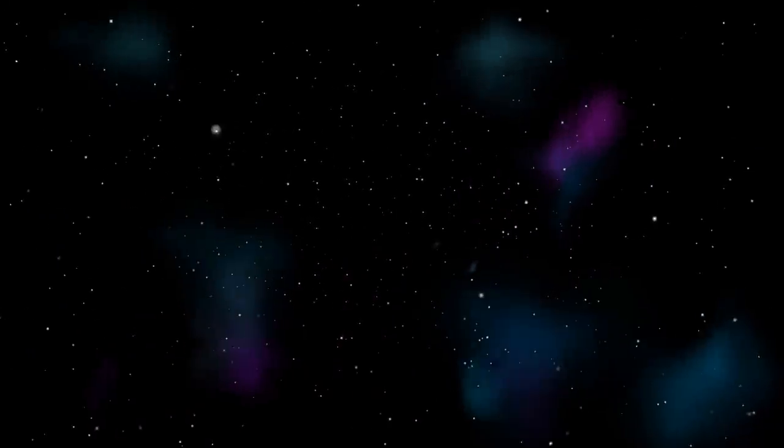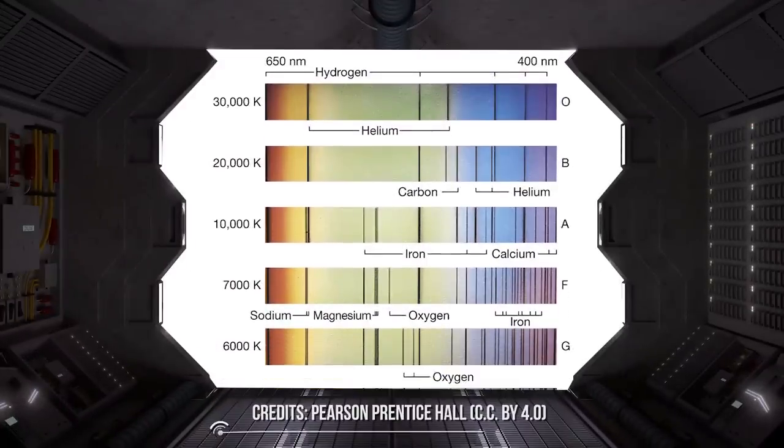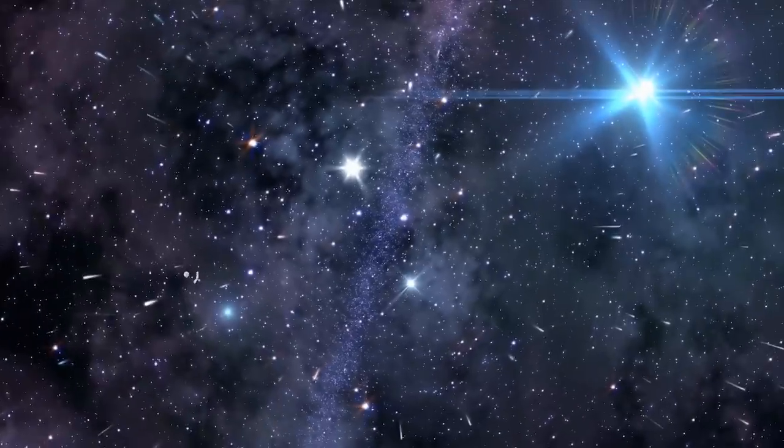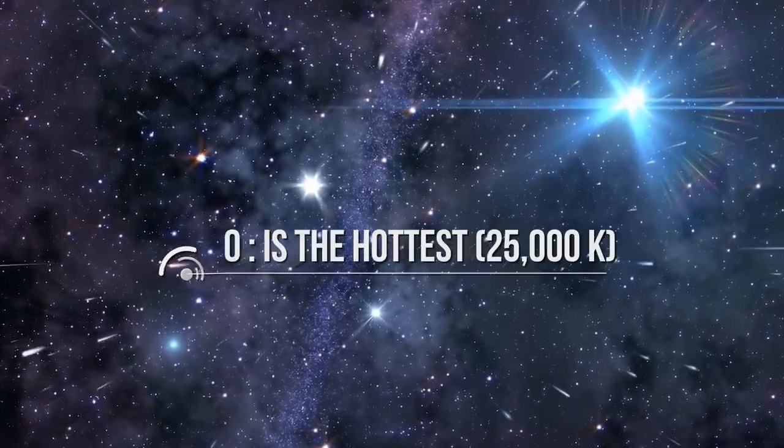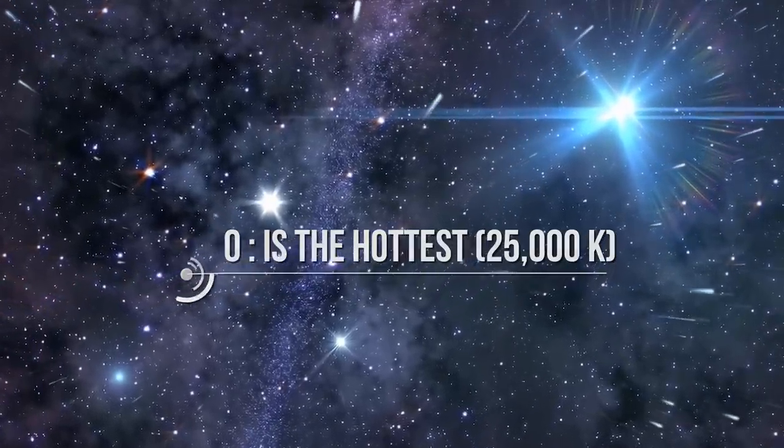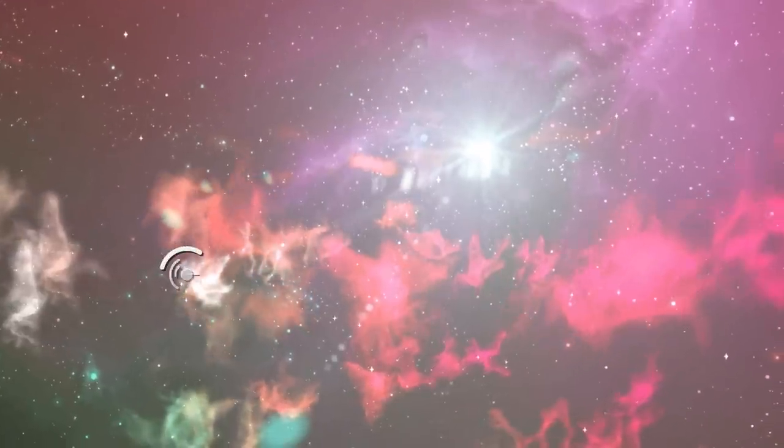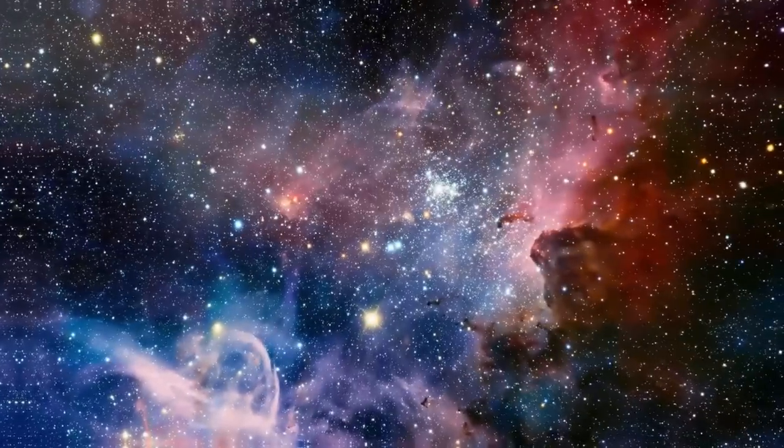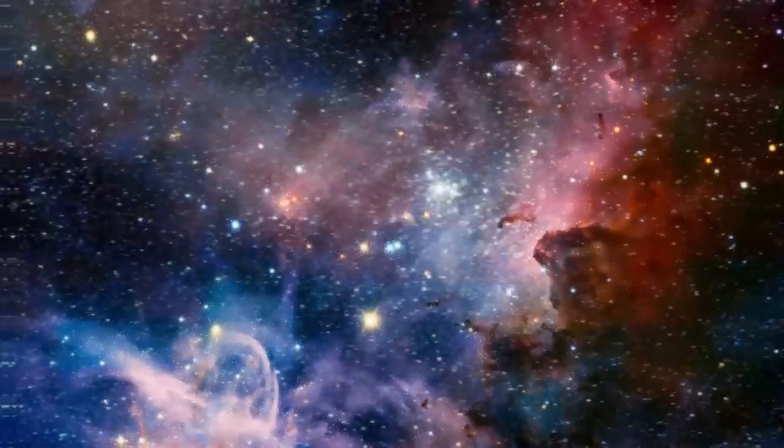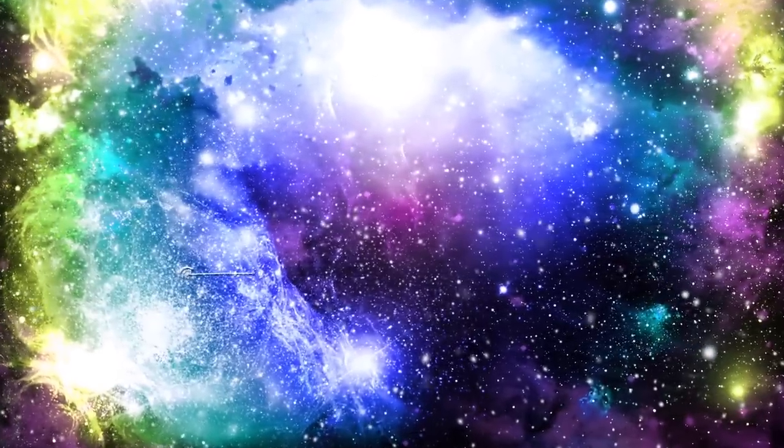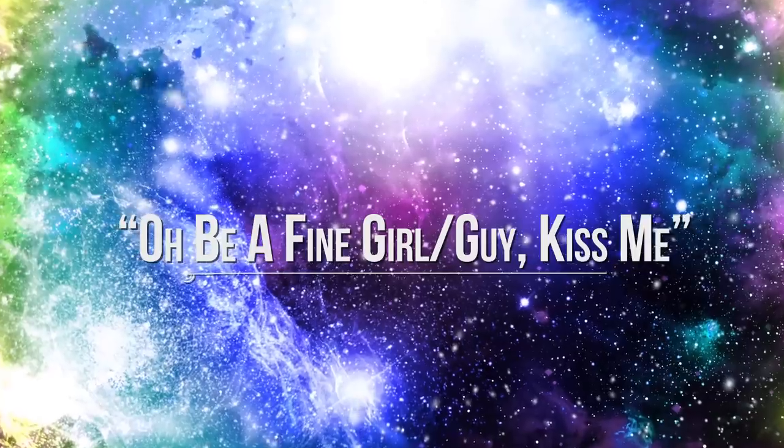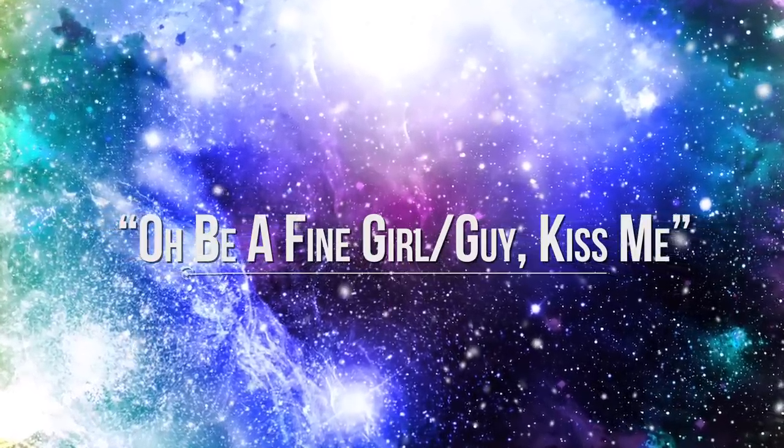In the Harvard system, the stars are classified from hottest to coolest using letters O, B, A, F, G, K, M, where O is the hottest at 25,000 Kelvin and blue in color, and M is the coolest at 3,500 Kelvin and red in color. The letters are further subdivided from hot to cool. An adapted and famous mnemonic for memorizing the sequence of stellar classification is: Oh, be a fine girl, guy, kiss me.